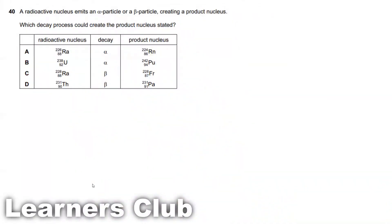Question 40. A radioactive nucleus emits an alpha particle or a beta particle creating a product nucleus. Which decay process could create the product nucleus stated? So in our current syllabus we have 2 beta particles, one is negative and one is positive. This is a 2015 paper where in our syllabus a positive beta particle was not introduced. So they just mention it as beta, which means this is the negative beta particle. So we can just take it as 0, minus 1.